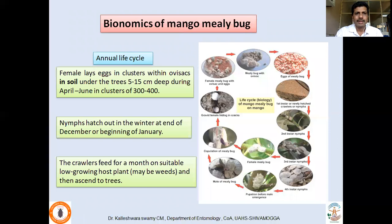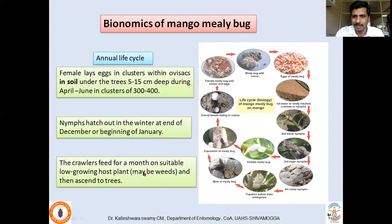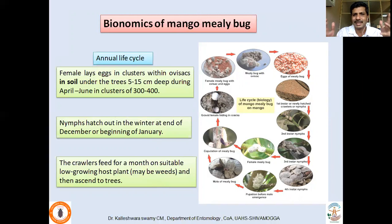Drosicha mangiferae has an annual life cycle. Females descend from the tree and lay eggs in clusters within a waxy sac, going to a depth of about 5 to 15 cm in the soil. Each female can lay 300 to 400 eggs. Nymphs hatch at the end of December or beginning of January. For some time, they feed on various weeds in the orchard — especially chirodendron and other weeds — then start ascending to the tree. The eggs are laid during April–June but hatch during November–December, which is why the life cycle takes one year. Rastrococcus completes a generation within a month.